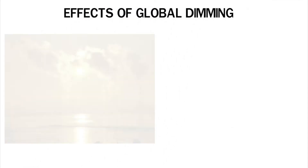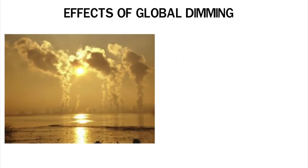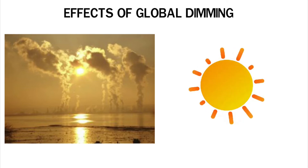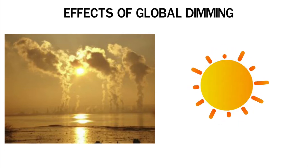Effects of global dimming. Global dimming affects the planet in many different ways. All living things on Earth get their energy from the sun. If there was no sun, the Earth would become a big ball of ice floating in space.